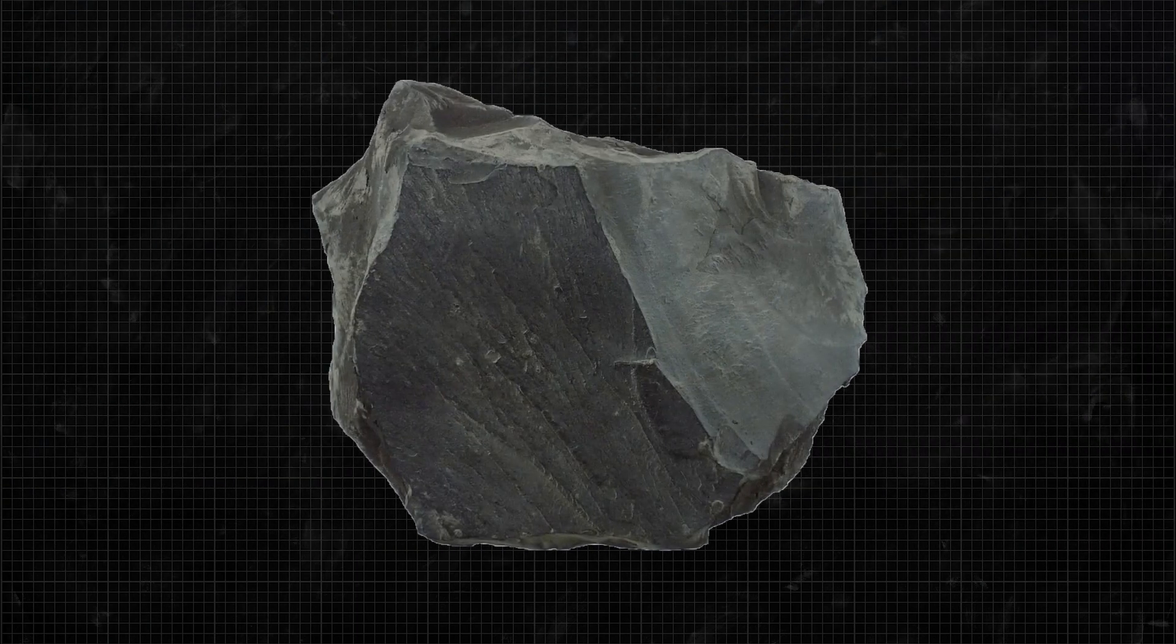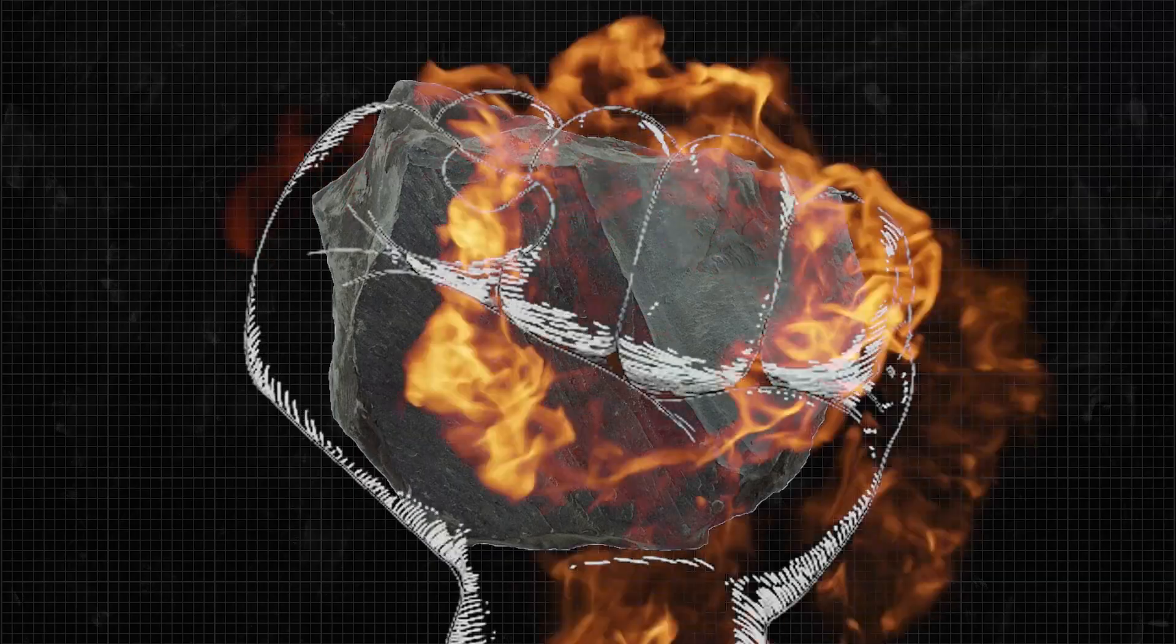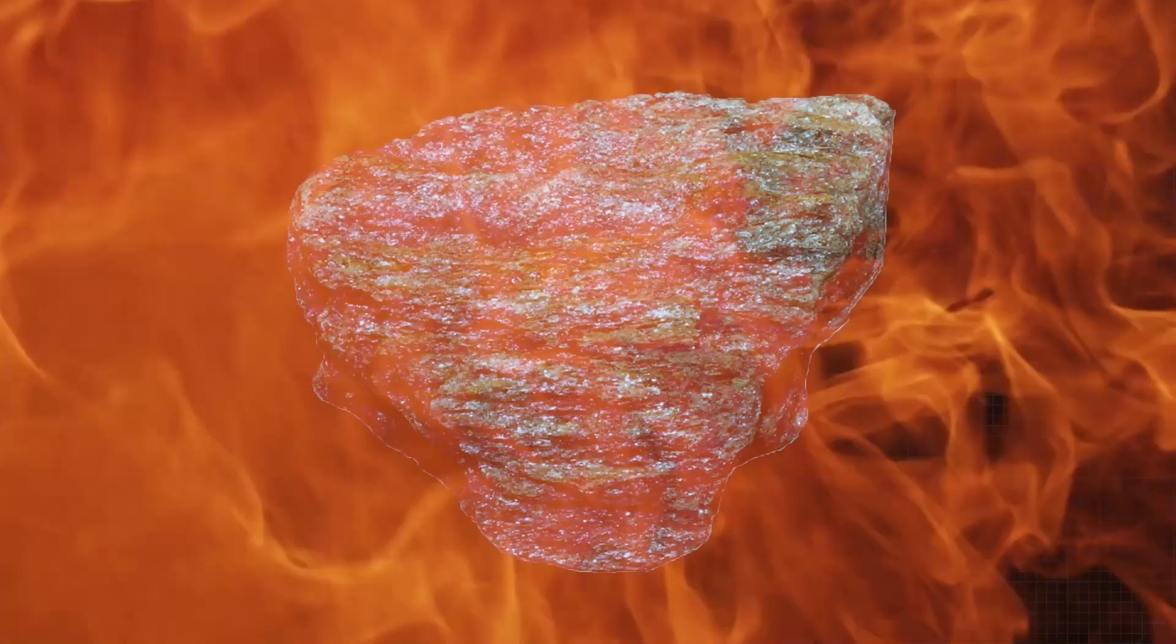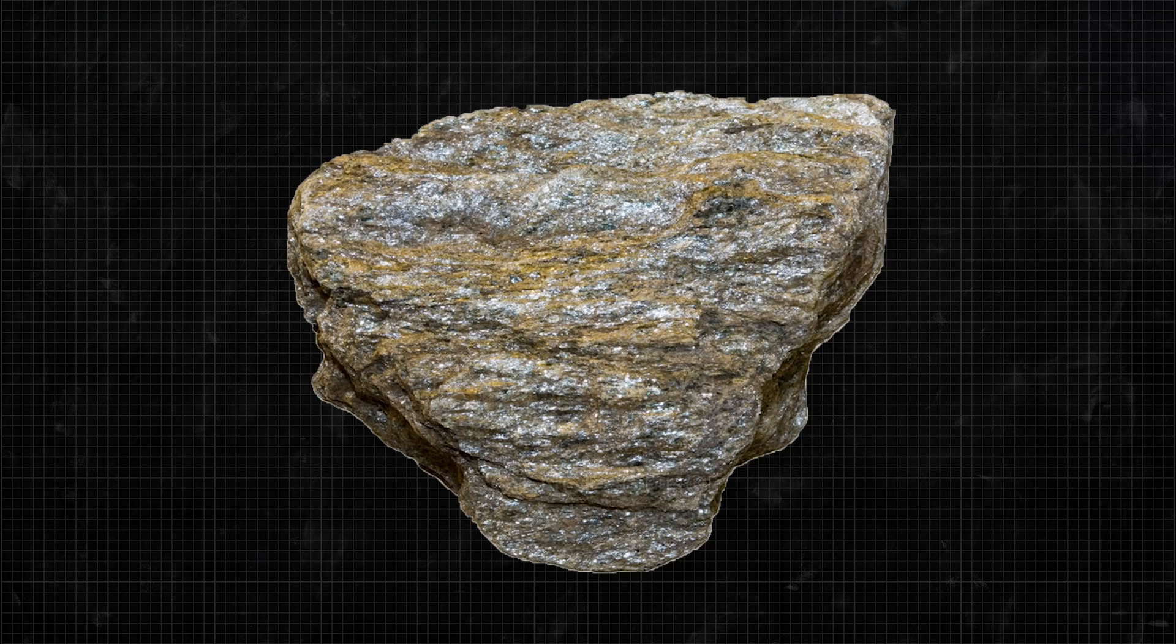If you take a sedimentary rock like a mudstone, squeeze it and heat it enough, you'll get a new metamorphic rock called mica schist. Most of this squeezing and heating happens in the crust as a result of increased temperatures and pressures.